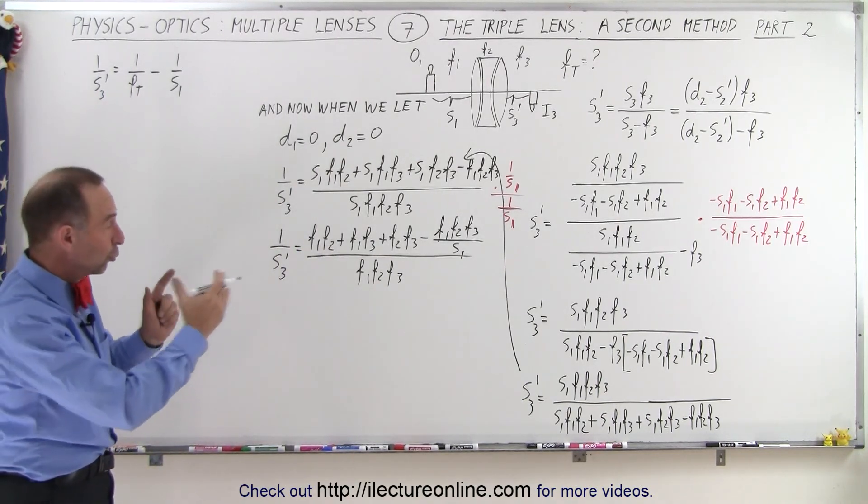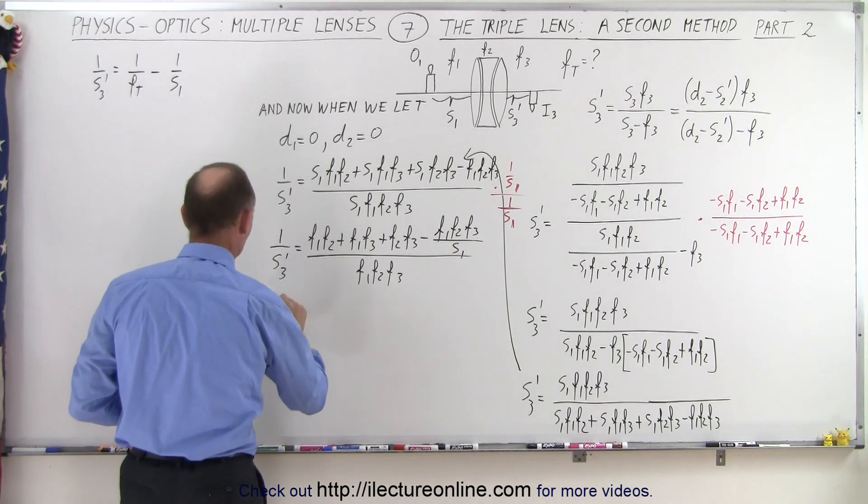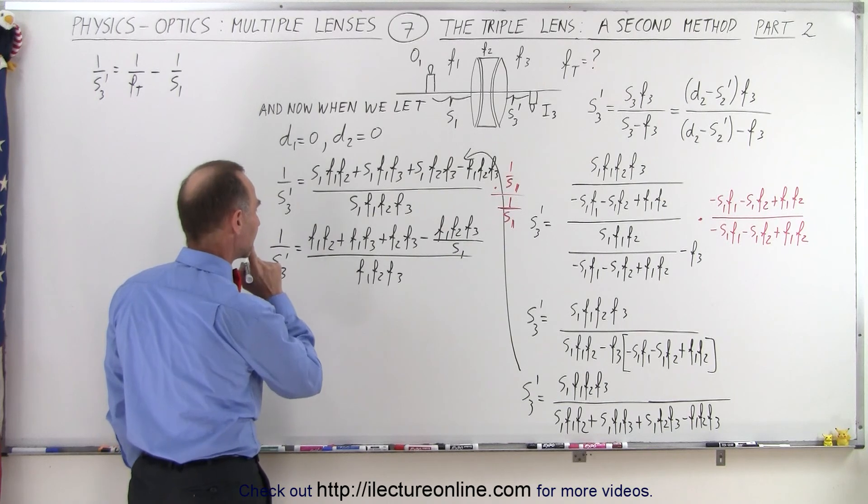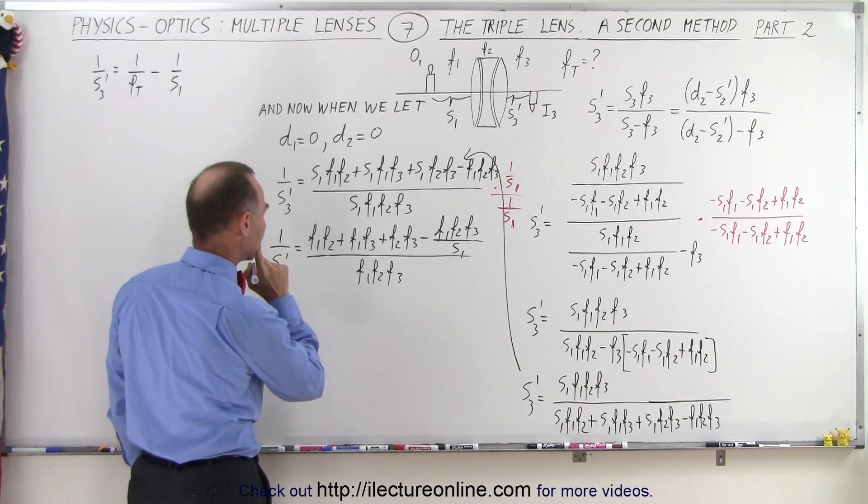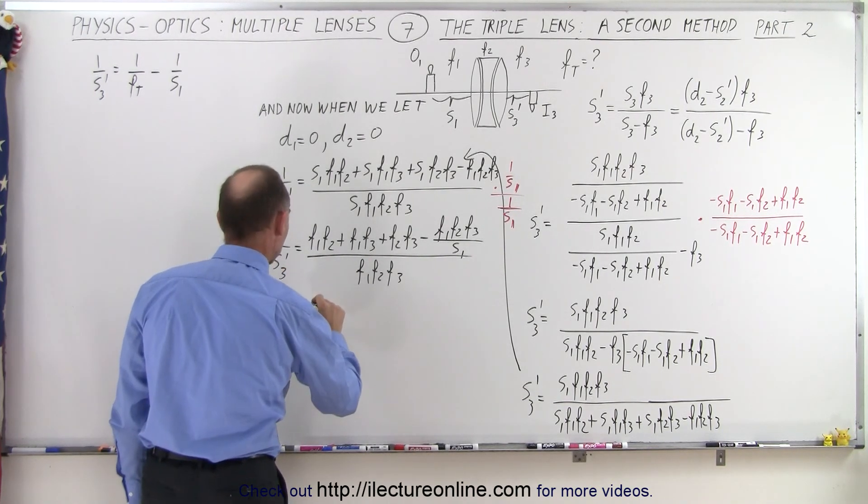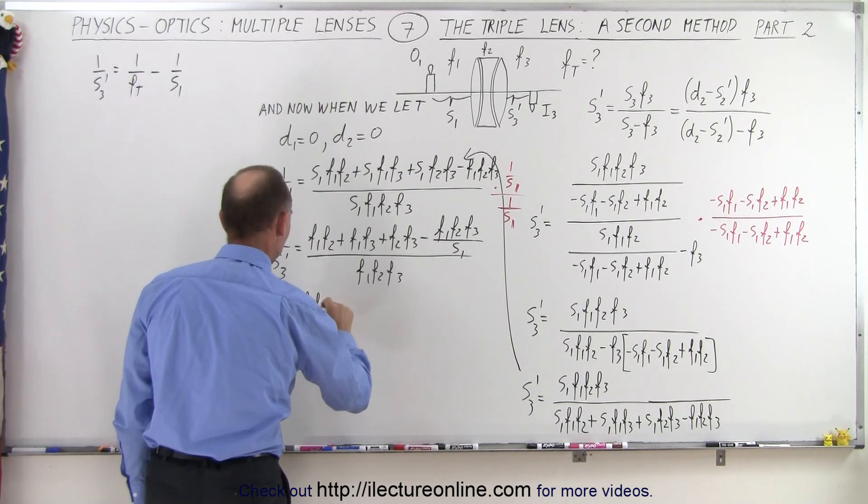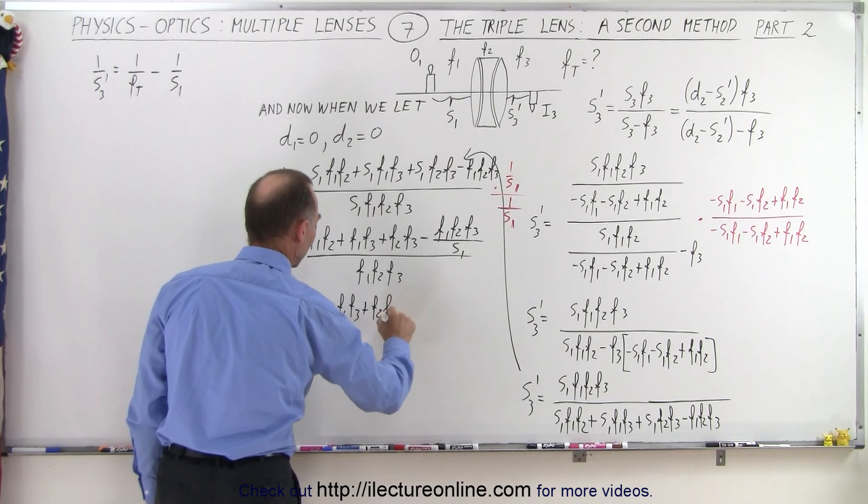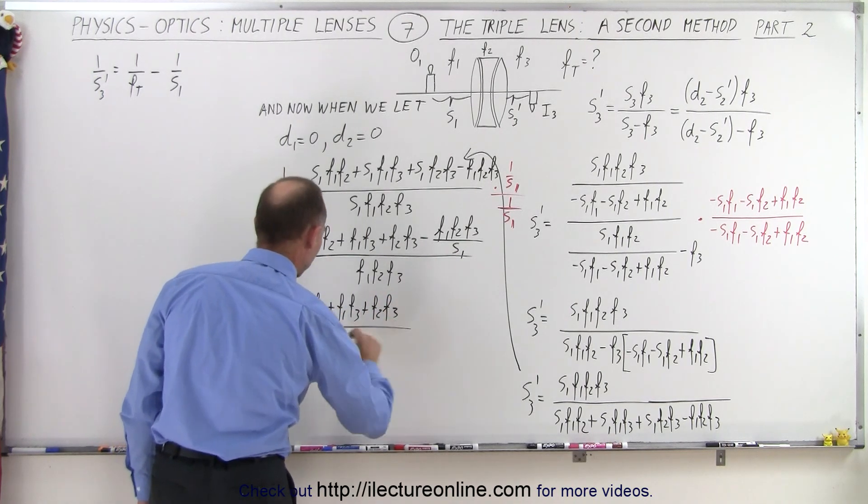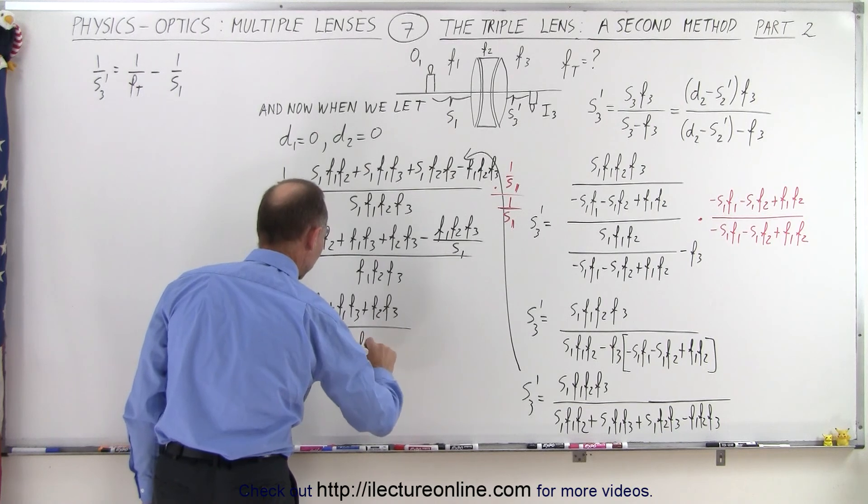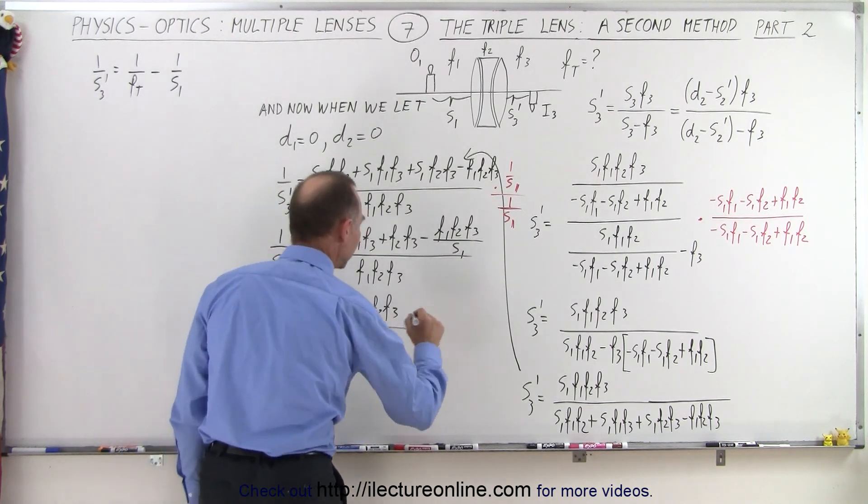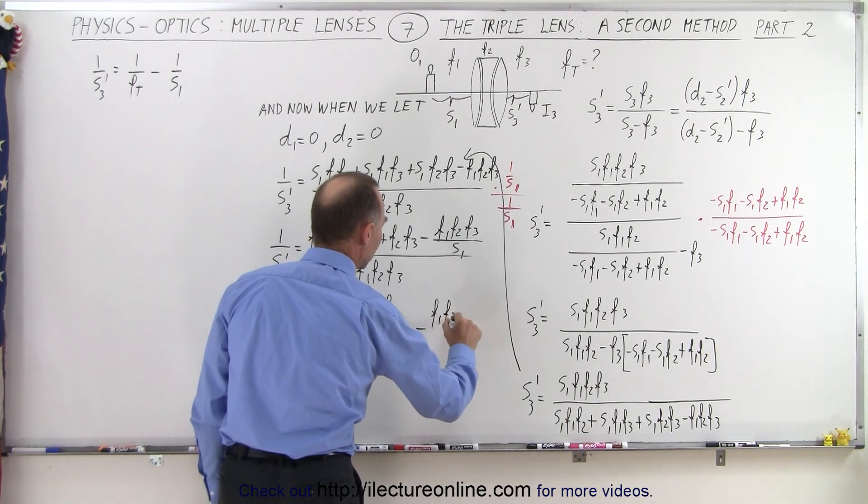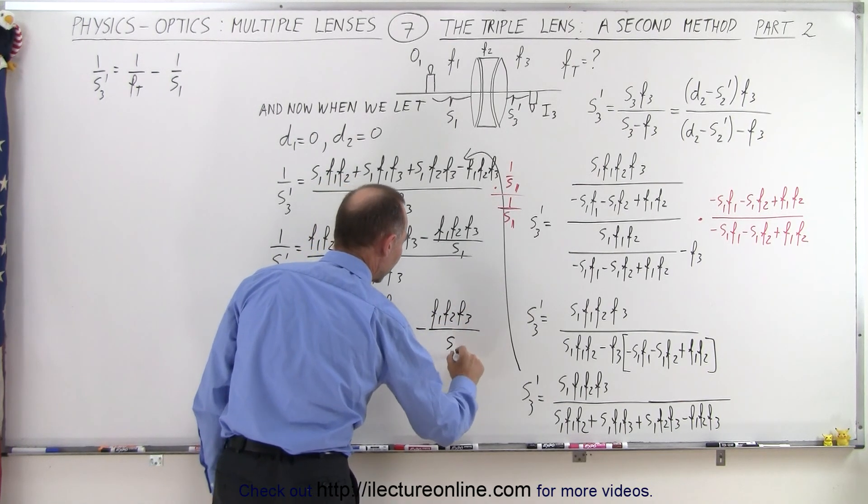Now what we want to do here is separate that into two separate fractions. So this can be written as 1 over s3 prime is equal to f1 f2 plus f1 f3 plus f2 f3, all divided by f1 f2 times f3.